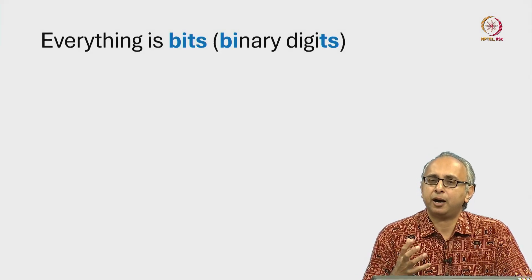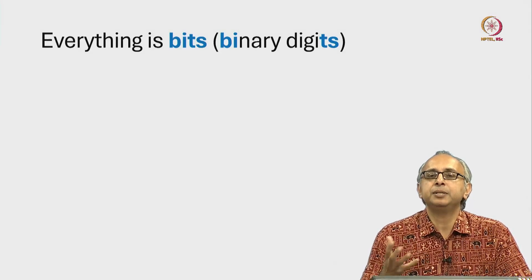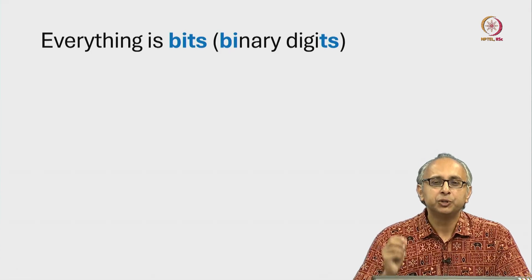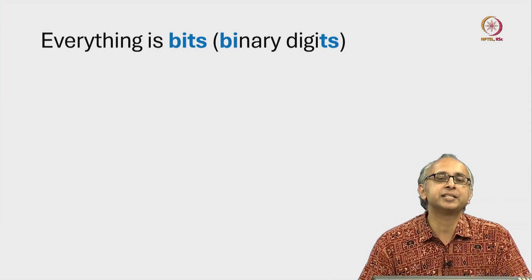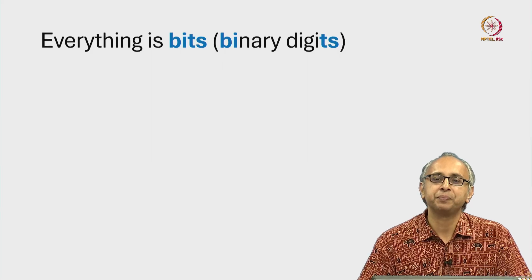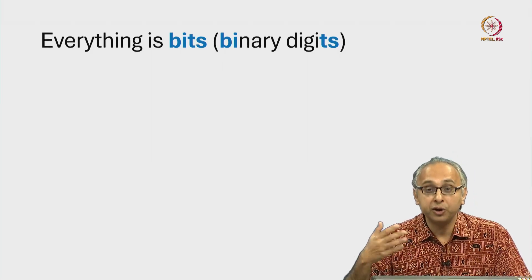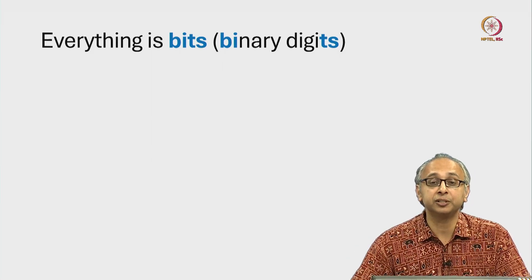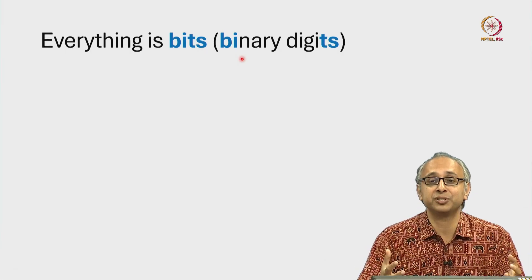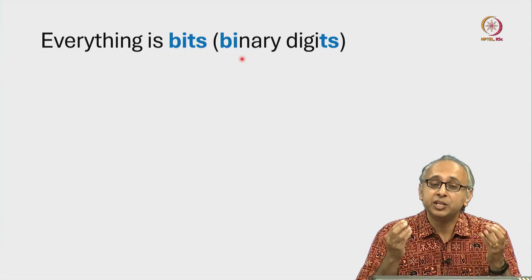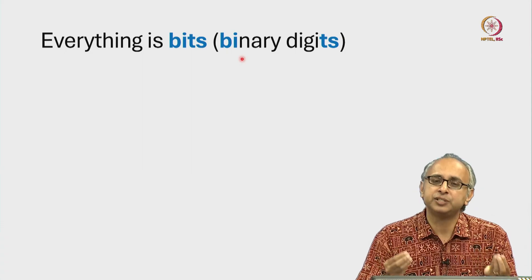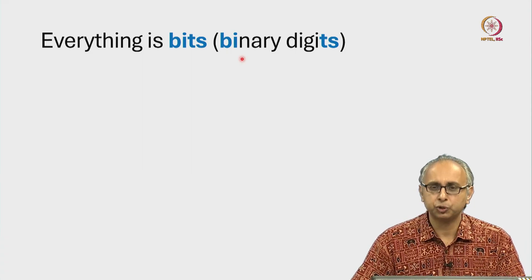As we have seen, there are some limitations in terms of what can be represented. To get a better understanding of why we have such limitations, it's important to remember that on any digital computer, everything that can be represented is represented using binary digits — zeros and ones.